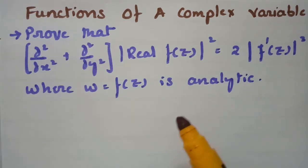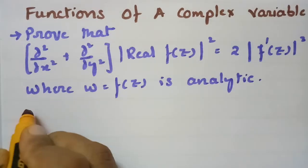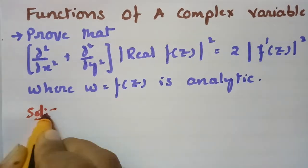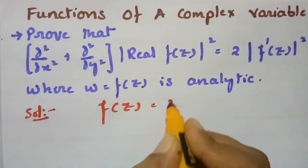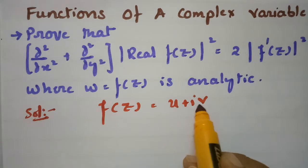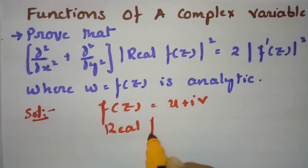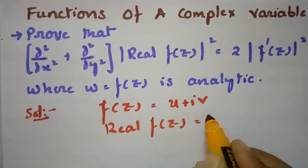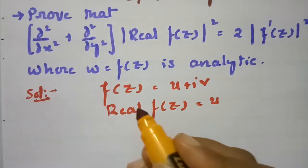One important thing: f(z) being analytic means it satisfies the CR equations and also obeys the Laplace equation. According to the given data, f(z) = u + iv. It is very clear that u is the real part and v is the imaginary part. Therefore the real part of f(z) is u and the imaginary part is v.